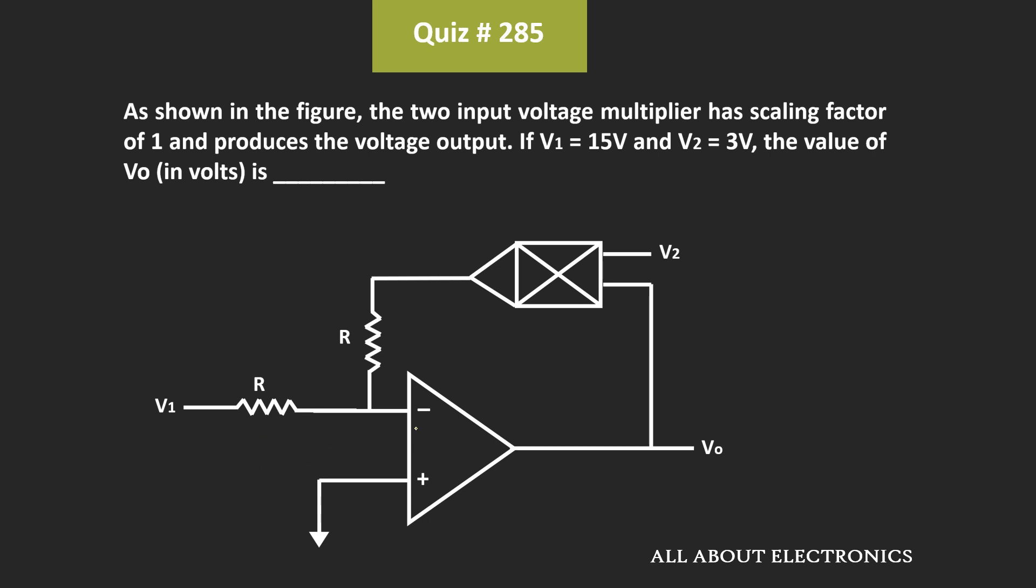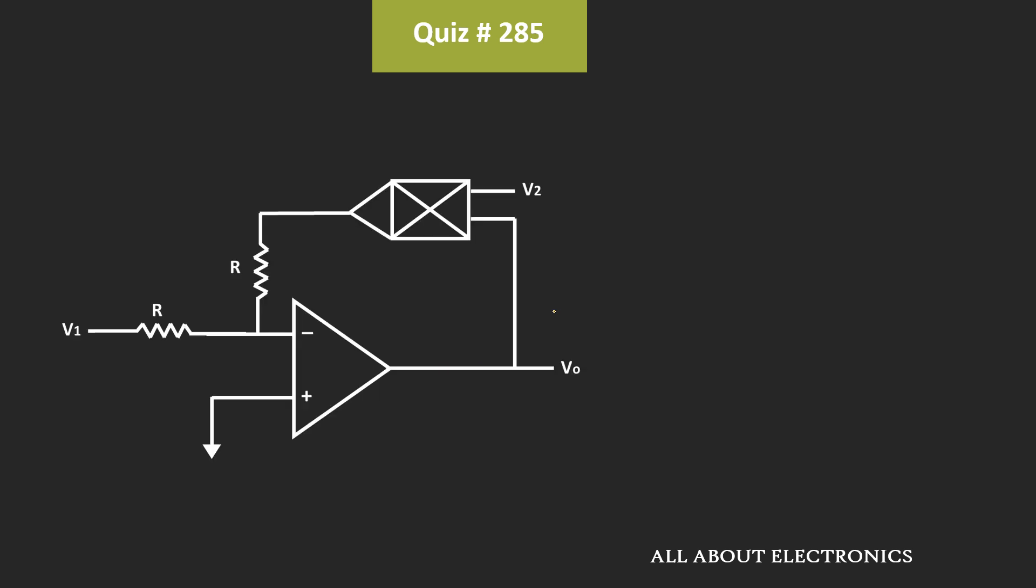In this question, we have been given this op-amp circuit, and as shown in the figure, this two-input voltage multiplier is connected to this op-amp circuit.